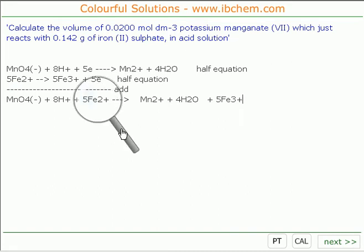Well, let's inspect the actual question. We're going to calculate the volume of potassium manganate, which reacts with a certain number of grams of iron II sulphate. Right. So we actually need then the relative mass of iron II sulphate. Now, this isn't given in the question, so we'll have to assume that the iron II sulphate is just FeSO4.